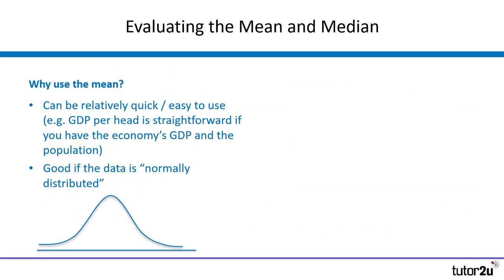In this case the mean is not a particularly good type of average to have used. So why would we use it? It can be quite quick and easy to use, so statisticians and economists like it because if you have the right information it's an extremely quick calculation. For example, if you want to work out GDP per head — a measure often used as a quick snapshot of living standards in an economy — that's straightforward to do if you already have the economy's GDP and population size, which most governments have readily to hand.